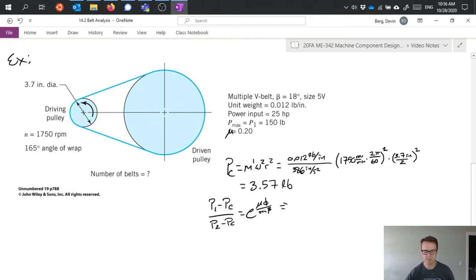We have 150 pounds minus 3.57 divided by P2 minus 3.57 and that equals e to the friction which is 0.2 times the angle.